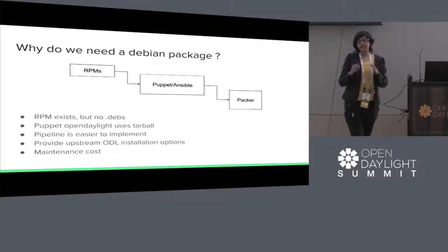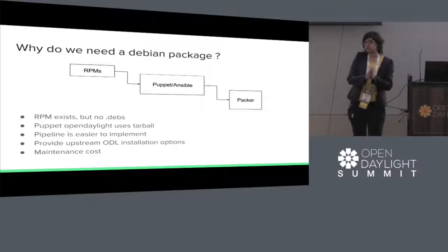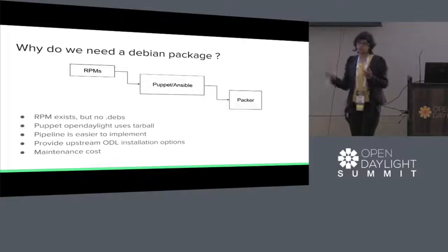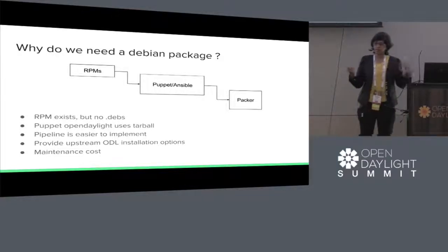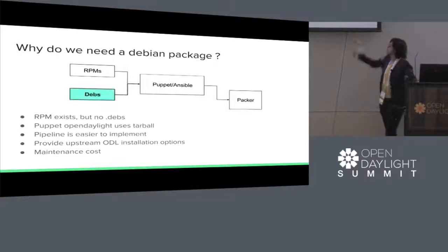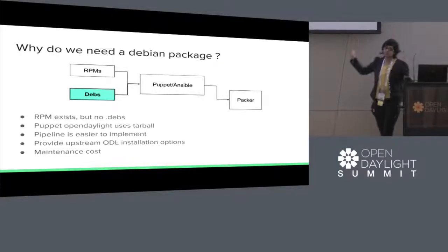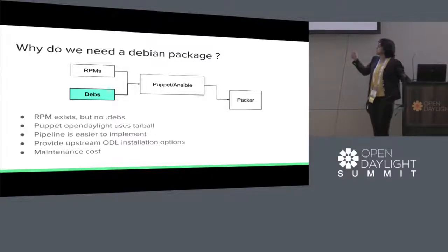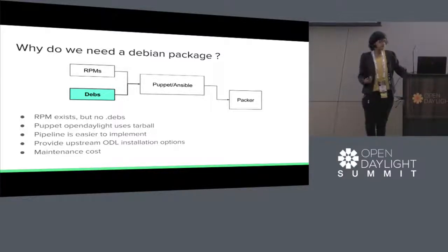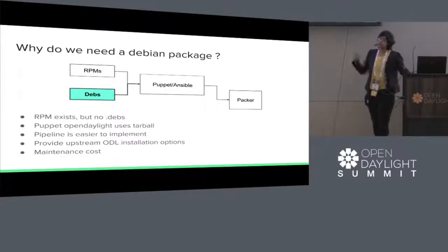There's no such pipeline because there were no .debs — no such pipeline existed. Puppet OpenDaylight used a tarball for Ubuntu-like OSs. So if we have .debs, it will follow a similar pipeline and will be easier to maintain. Also, ODL upstream will provide installation options, so it's always better to have it in the upstream.